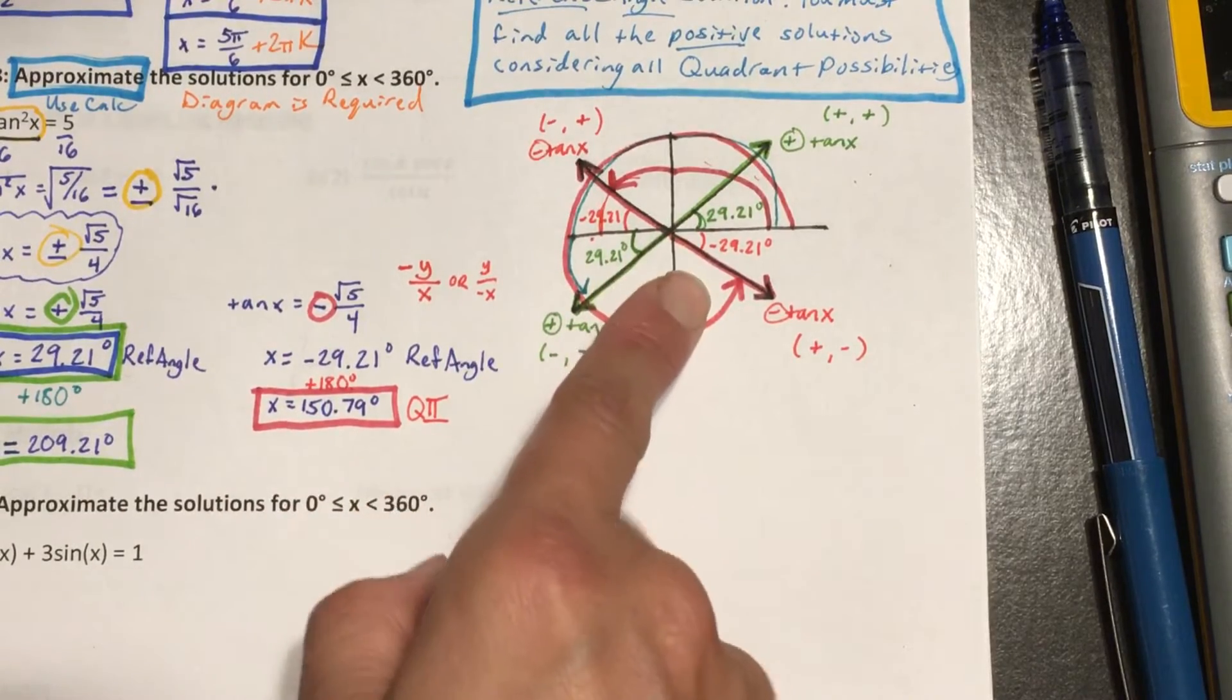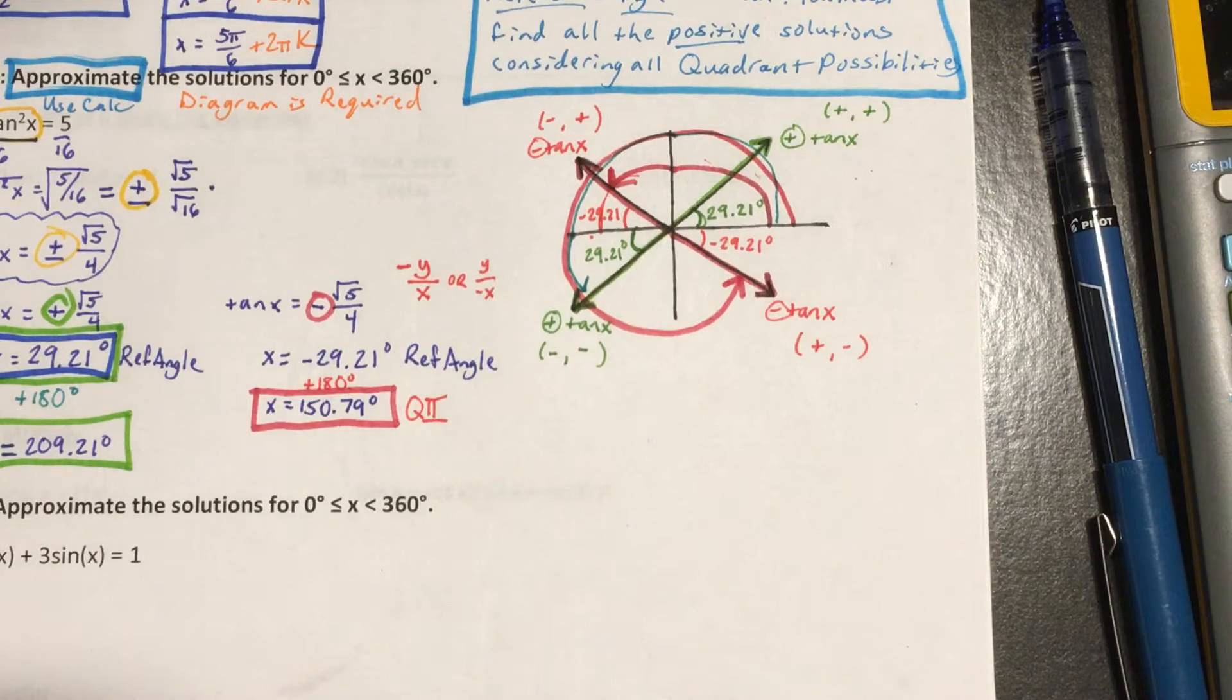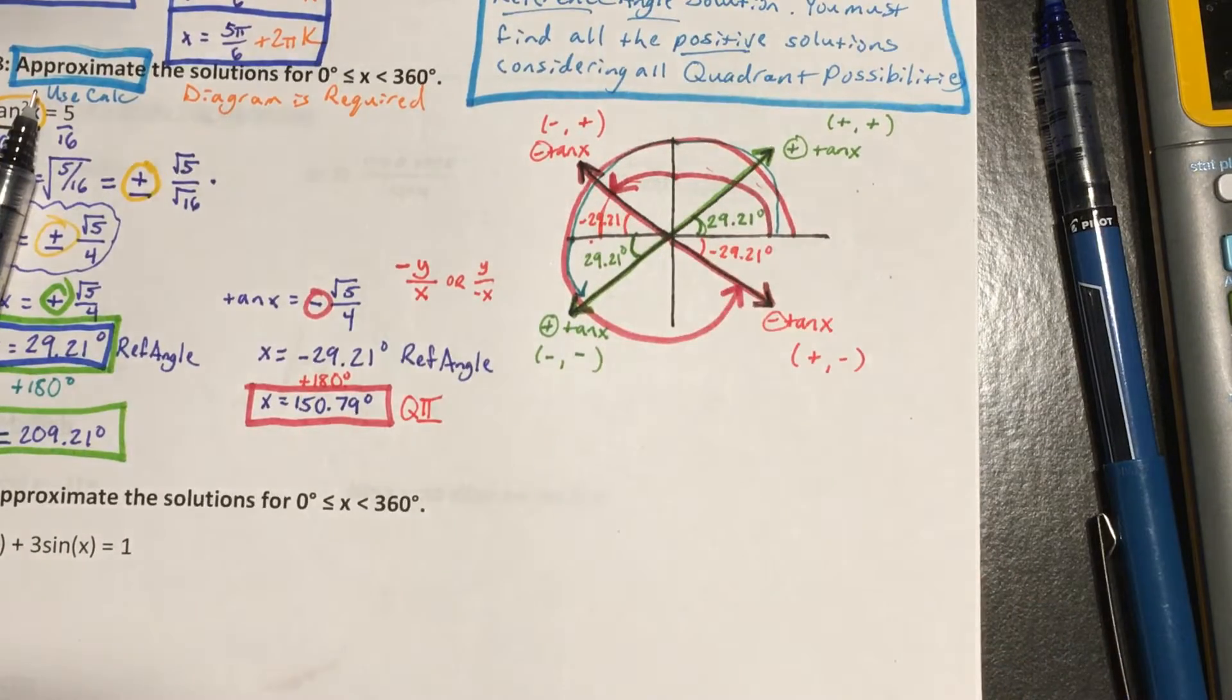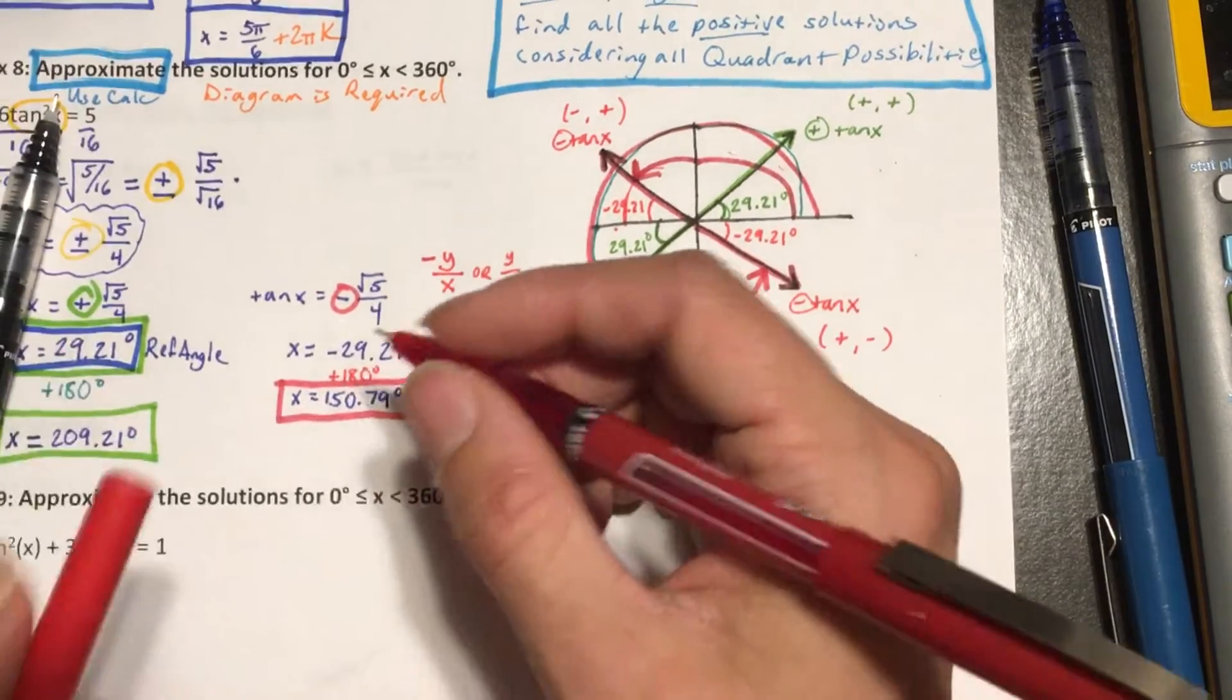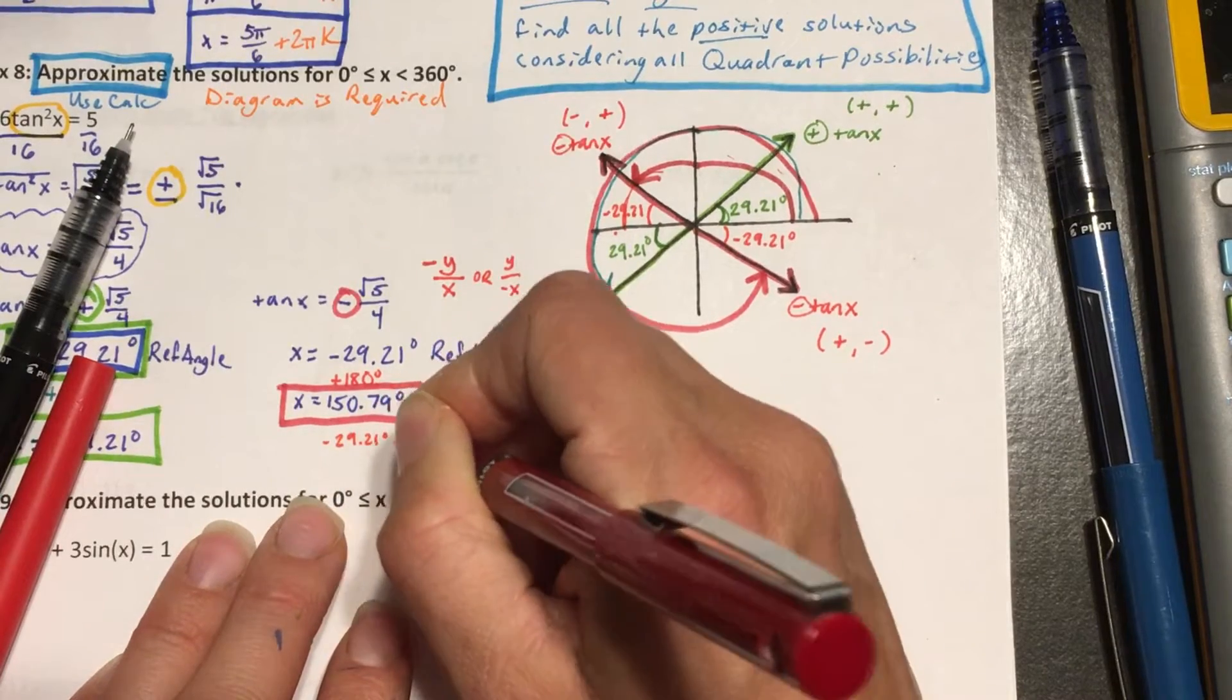then find what that missing wedge is by doing 90 minus 29.21, or I can just consider that the full rotation is 360 and subtract 29.21. So negative 29.21 plus 360.